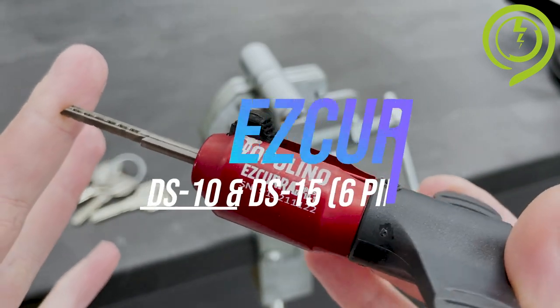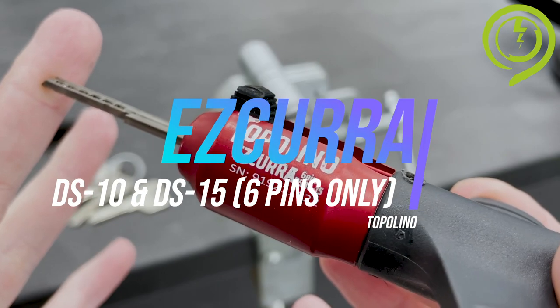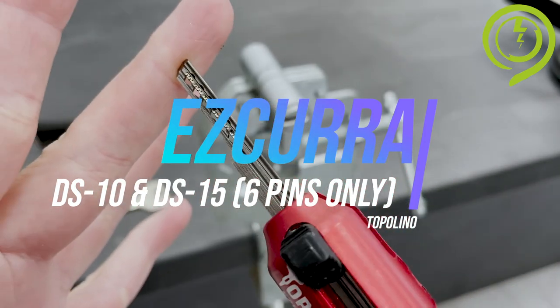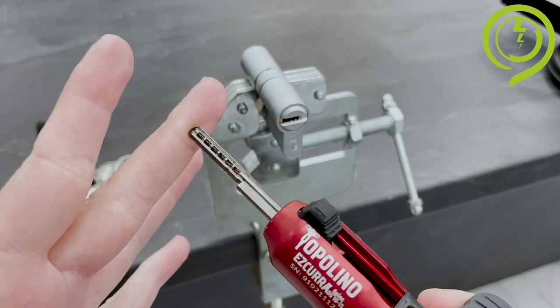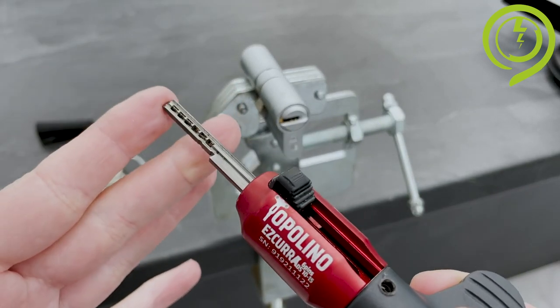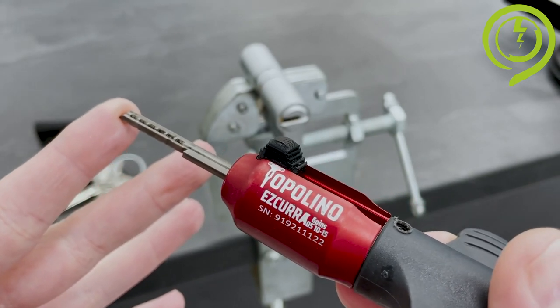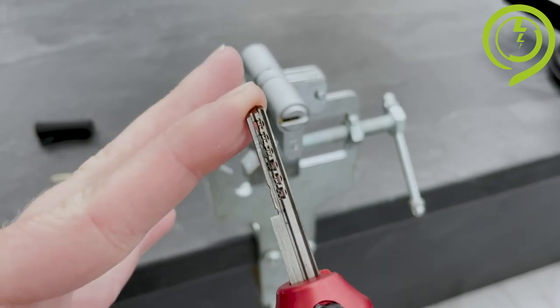Hello, in this video I'm going to show you the Topolino Escura DS10 and DS15 decoder for 6 pins only. From the start I'm saying that the decoder is not suitable for Escura DS10 and DS15 with 5 pins, so 6 pins only.